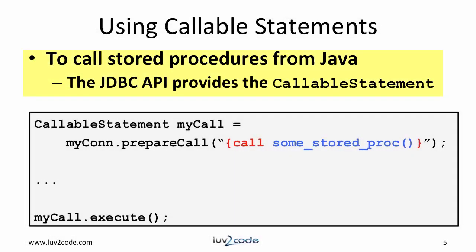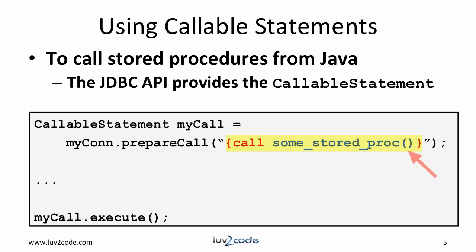In JDBC, you make use of callable statements to make a call to a stored procedure. There's a special syntax to call stored procedures. You make use of curly braces inside of the string. You also make use of the JDBC keyword 'call' and that's followed by the name of the stored procedure. In this example, we're not passing any params, so we just use the open and close parentheses. Finally, we execute the stored procedure.